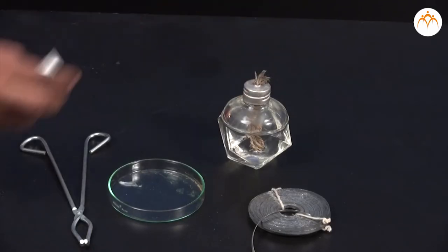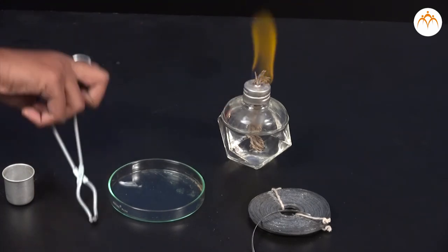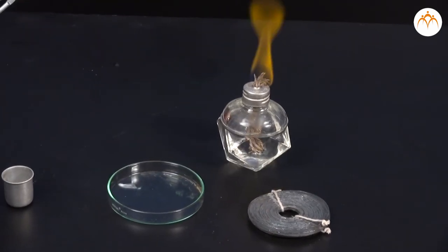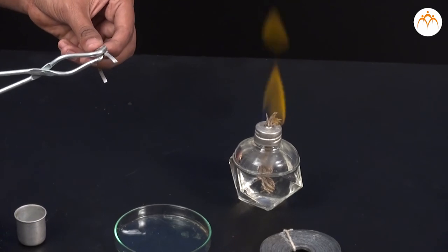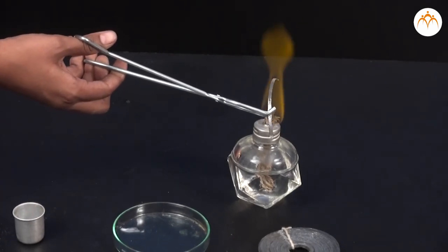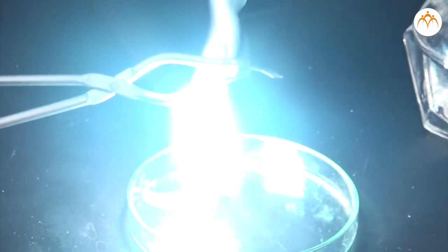Let's perform this activity to experience the combustion of metals. A pair of tongs and a burner. Take different samples of metals: aluminium, copper, iron, lead, magnesium, zinc, and sodium. Hold the sample of each metal at the top of the flame with the help of a pair of tongs.